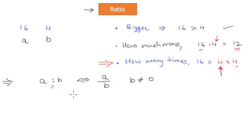So this is our fundamental definition of ratio. Now in this ratio, the first number a is called antecedent.